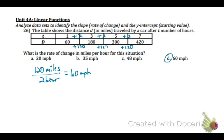26. The table shows the distance d in miles traveled by a car after t number of hours. What is the rate of change in miles per hour? So if you look at the time, we go from 1 to 3 to 5 to 7 hours. So that's increasing steadily by 2's. And then the distance goes from 60 to 180 to 300 to 420. And so that is also increasing steadily by 120. So that means our rate of change is 120 miles for every 2 hours, or the difference in the y values divided by the difference in the x values. And that simplifies to 60 miles per hour, choice D.